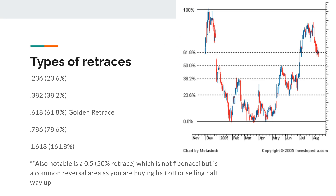What are the types of retraces you can get with Fibonacci? You have your 23.6% retrace, which is basically the first area where you can start using Fibonacci — whenever you reverse 23.6% from a higher low point in the other direction, you can start charting that Fibonacci. You have a 38.2% retrace, a 61.8% retrace which is the golden retrace, a 78.6% retrace which is pretty deep, and then a 161.8% retrace which exceeds where you even started noting that Fibonacci.